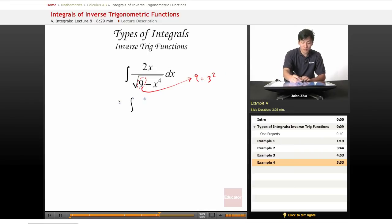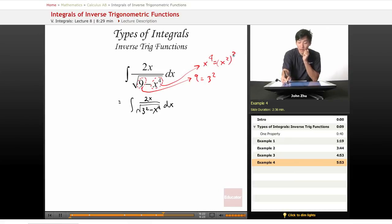So this 2x over square root of 3 squared minus x to the 4th. Well, x to the 4th is not really squared, but we know that x to the 4th happens to be x squared squared. So we can use x squared squared, so let's rewrite this.